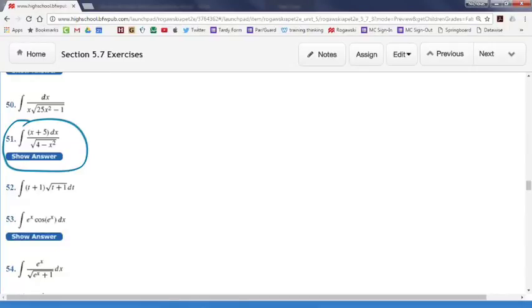Okay, we're doing 51. Don't forget you can split up things inside of an integral if they're adding. So we're going to say x over the square root of 4 minus x squared, is that right? Yeah, dx, and then plus the integral of 5 over the square root of 4 minus x squared dx.